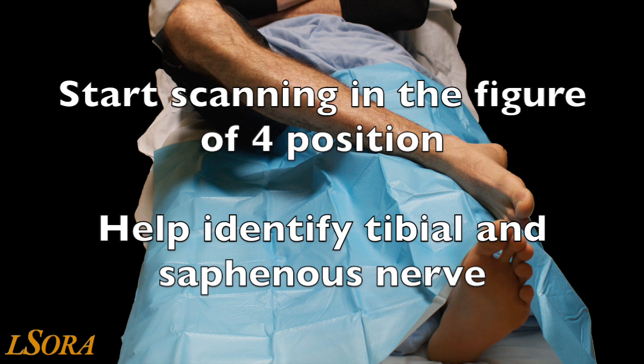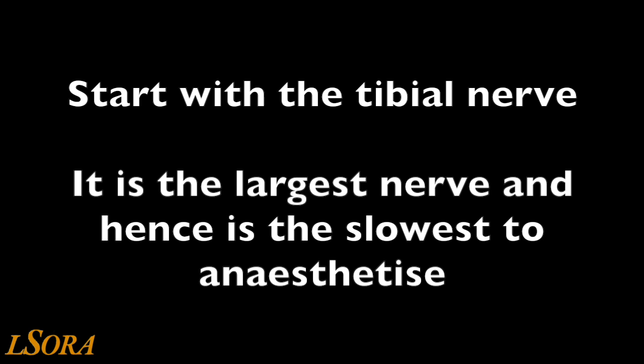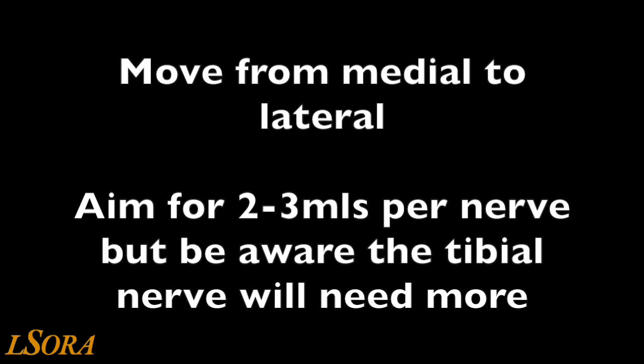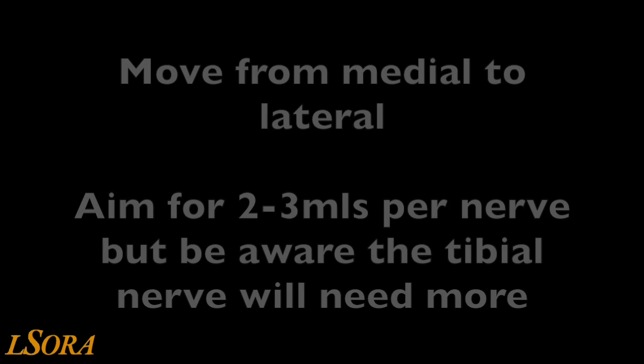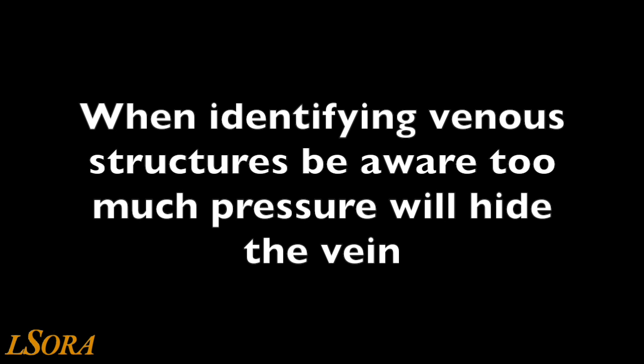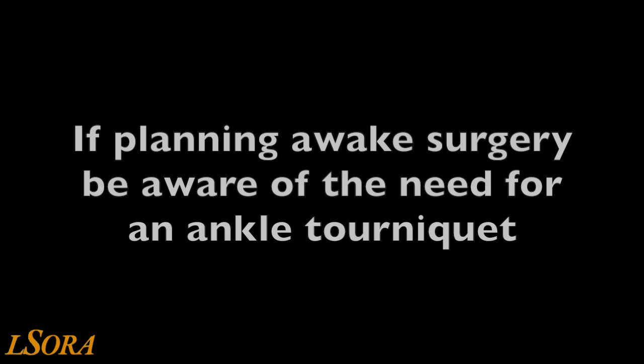Here are some tips or clinical pearls. Optimise your ergonomics to maximise your chance of success. Start scanning with the patient in the figure of 4 position — this helps identify the tibial and saphenous nerves. We advocate in-plane needling. Of the 5 nerves, it's important to start with the tibial nerve as it is the largest nerve and requires the longest amount of time for the local anaesthetic to work. Then work systematically around the ankle, moving from medial to lateral. Aim to deposit at least 2 mL of local anaesthetic per nerve, except for the tibial nerve which will certainly need more because of its larger size. When trying to identify venous structures, be careful with probe pressure — too much pressure will obliterate the veins. And lastly, if planning awake surgery, ensure the use of an ankle tourniquet.